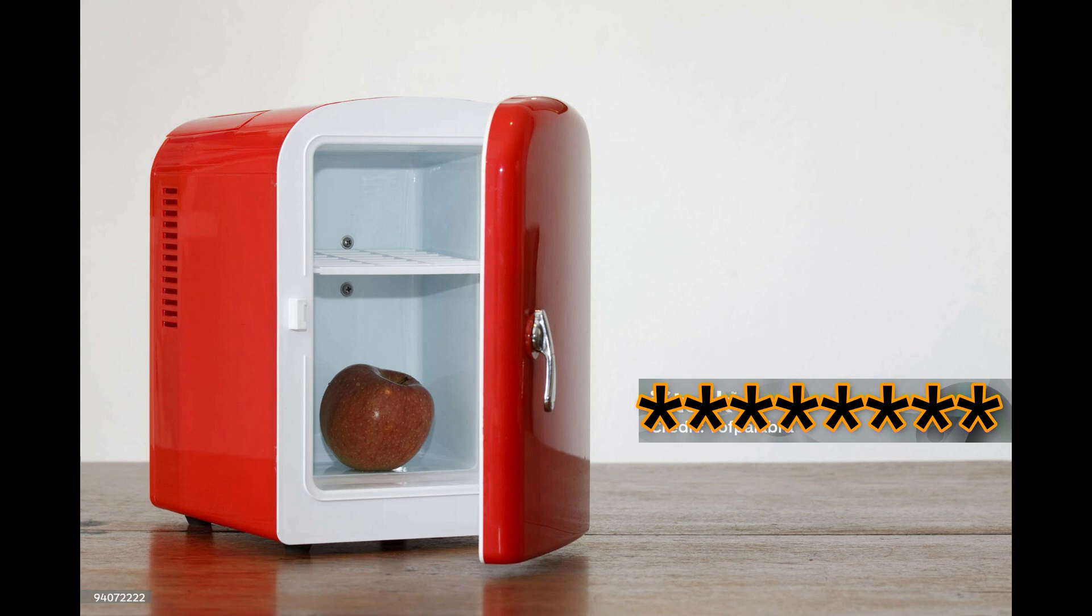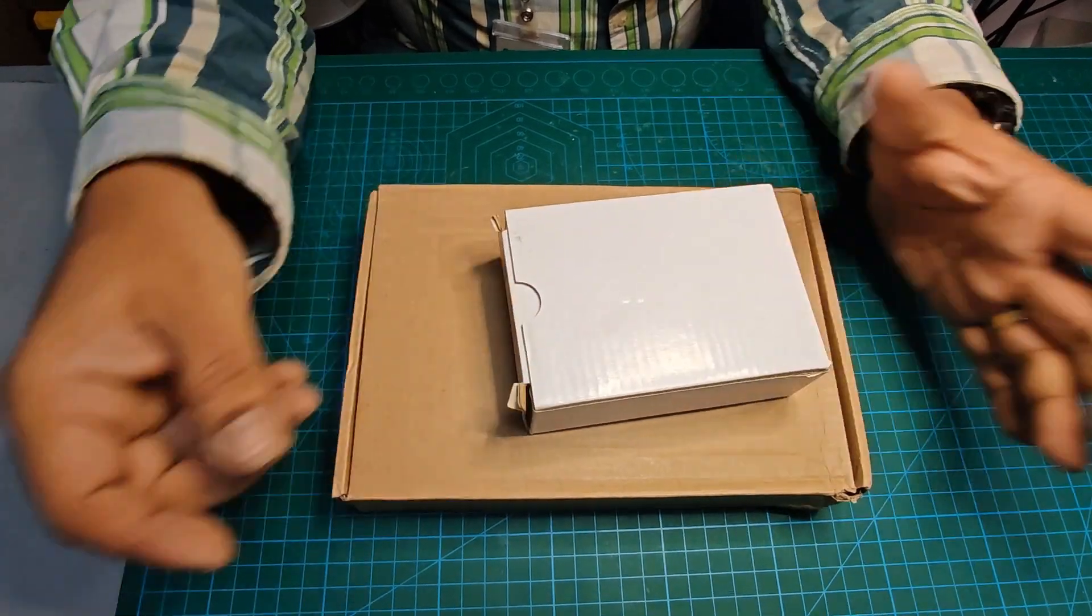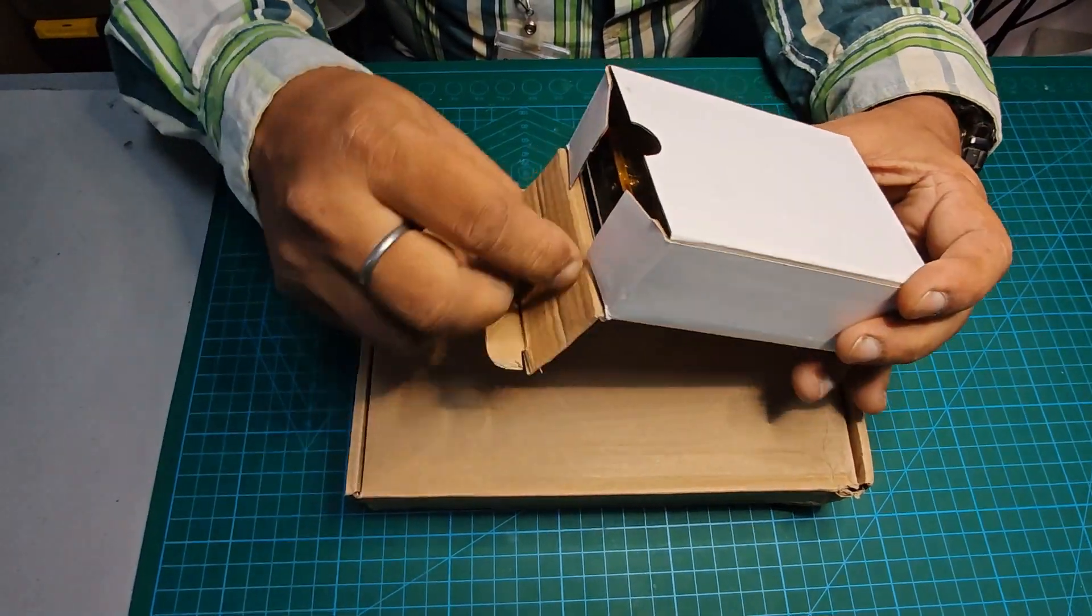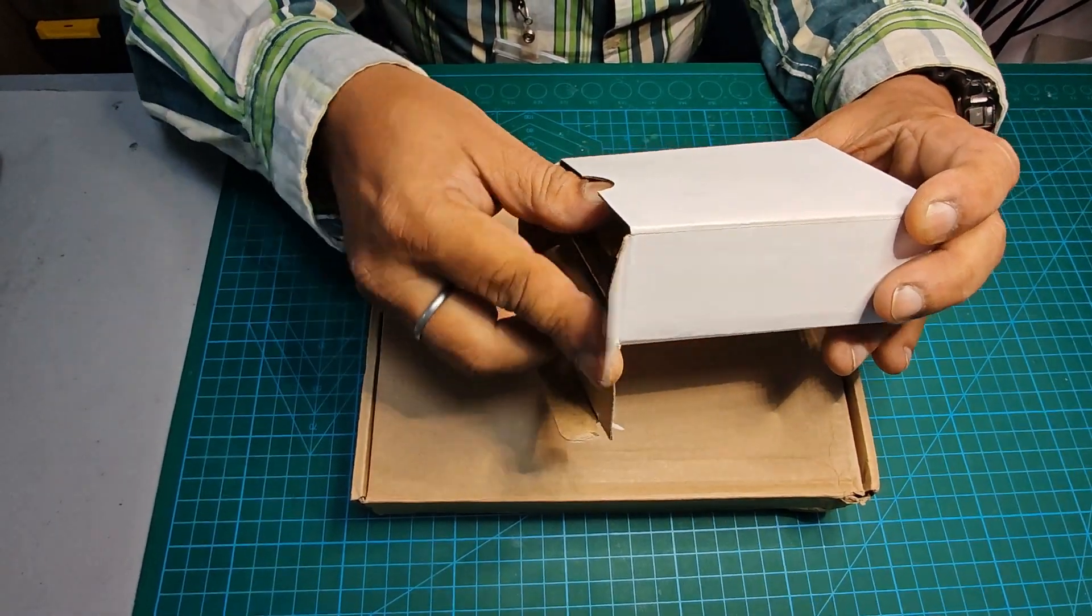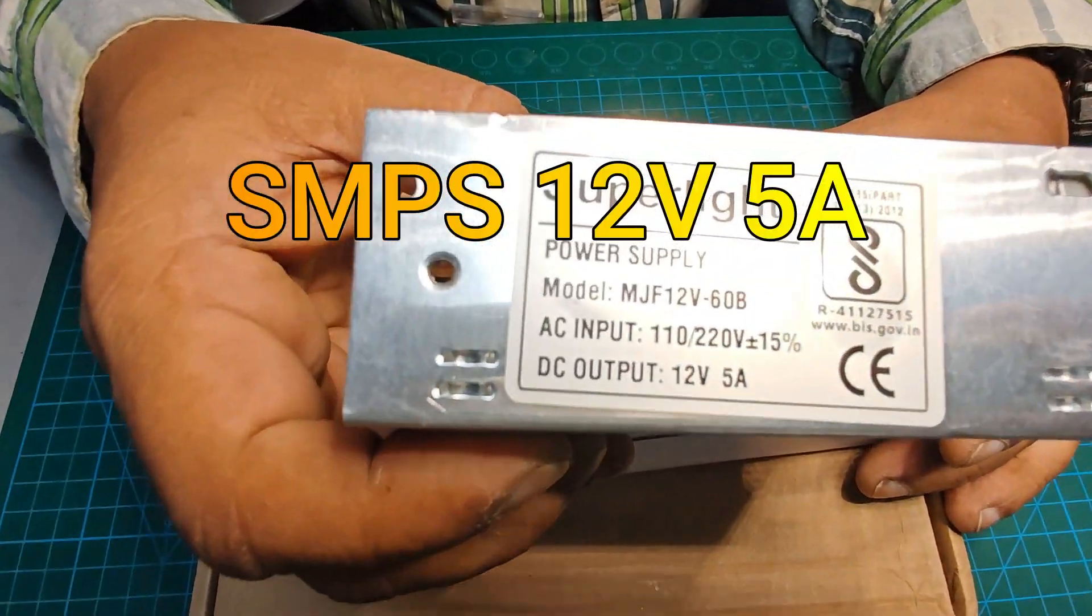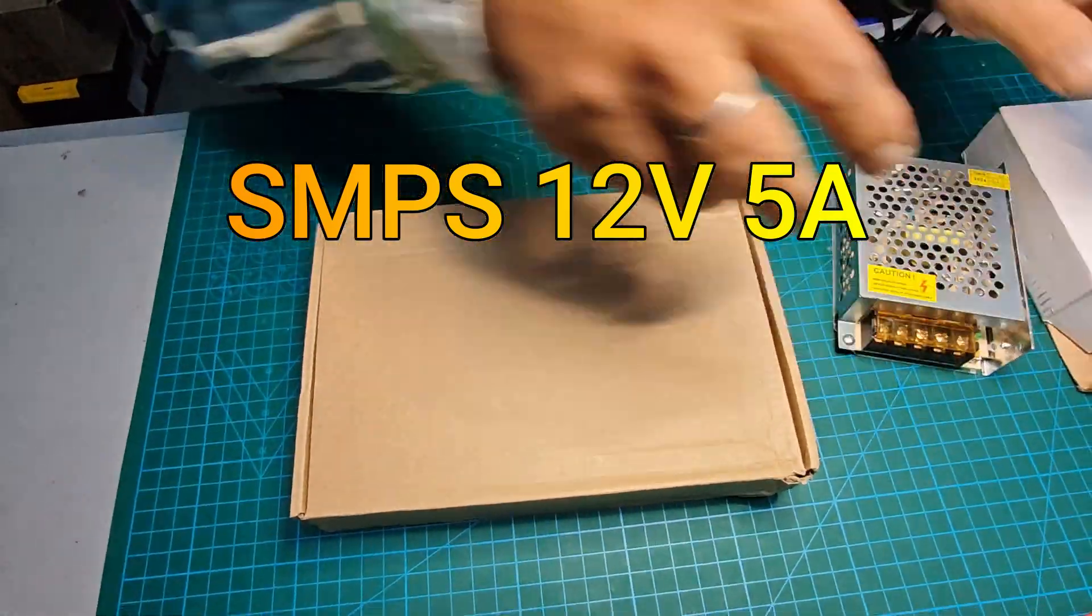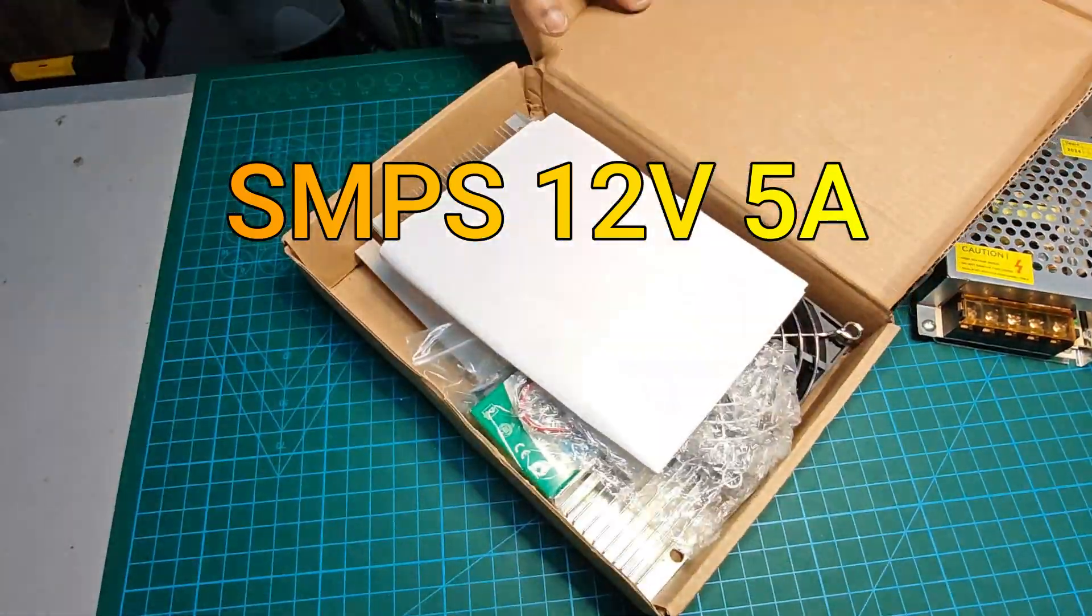My dear friends, I got this Peltier kit from Amazon. There are many websites which are giving this Peltier. I will be sharing this link in the description. So first I open this, the SMPS which is 12 volt 5 ampere. Let us open the box and see what else we have got.